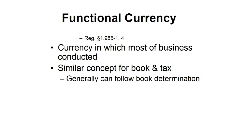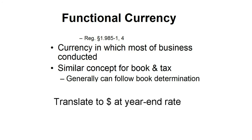Computations under Section 956 are done in the CFC's functional currency. We compute the basis in U.S. property in that functional currency — not dollars — and compute E&P in the functional currency. Then, the U.S. shareholder translates that functional currency 956 amount to U.S. dollars using the exchange rate on the last day of the CFC's tax year. This prevents movement in basis just because the exchange rate changed.